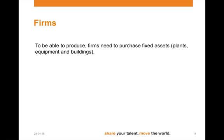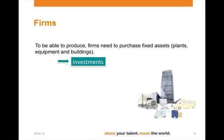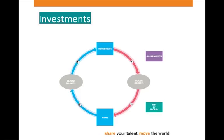Firms, on the other hand, need fixed assets — think in plants, equipment, buildings. And these are called investments. In our circular flow of income, that means there is a demand from firms on the goods market for these investments, and there's a flow from the goods market to firms as they have purchased these investments.